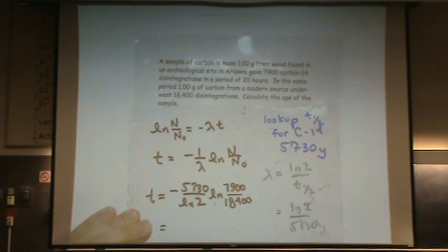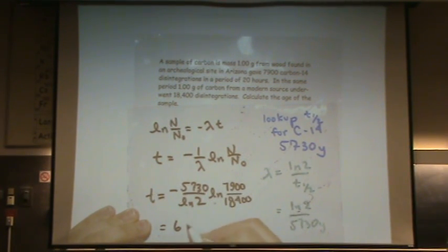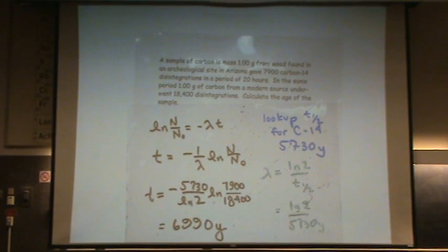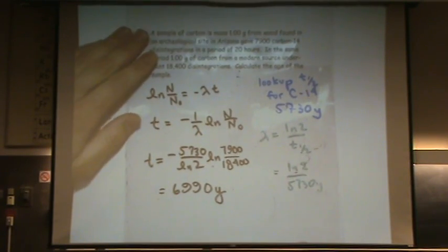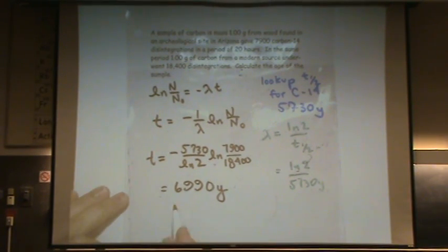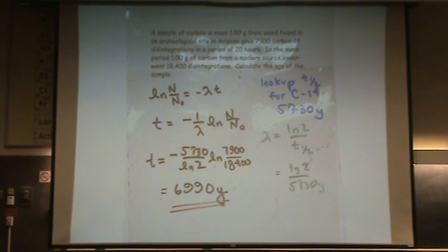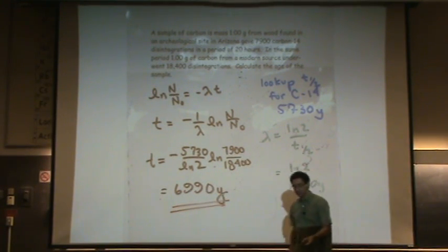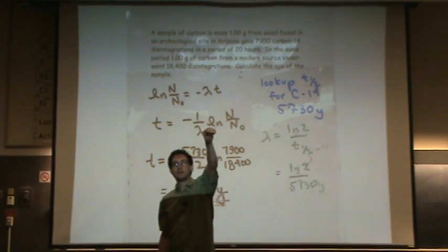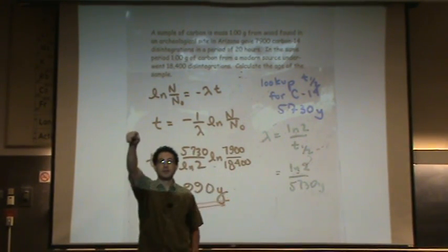This turns out to be essentially 7,000 years. So the sample was about 7,000 years old. This is a pretty typical type of problem for a first-order decay, rate law sort of problem.